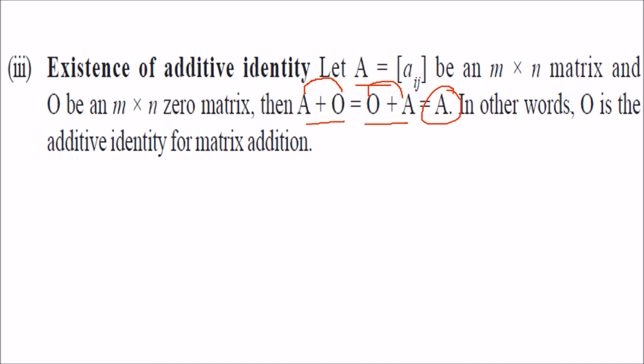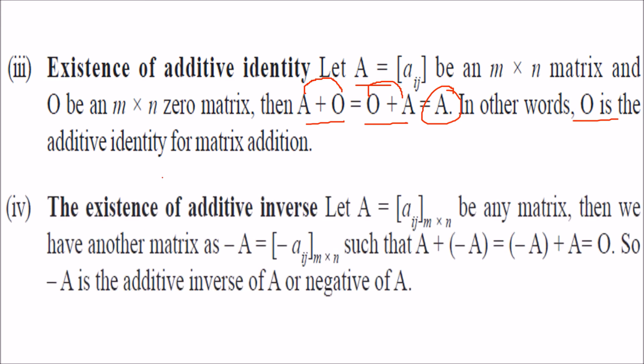That means O is nothing but the additive identity of matrix addition, and O is a zero matrix.